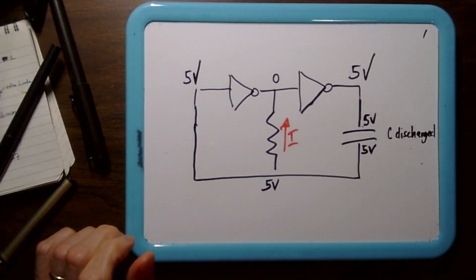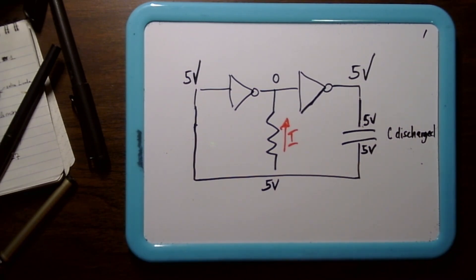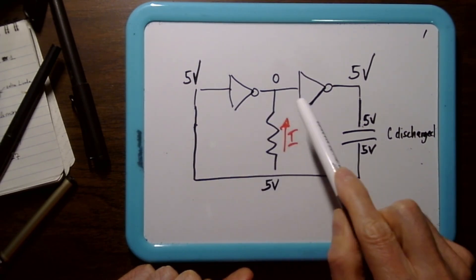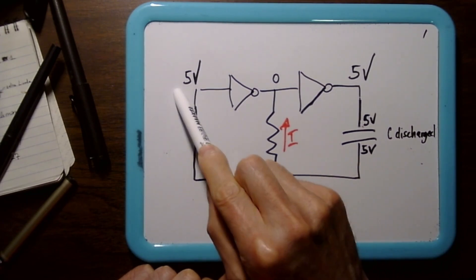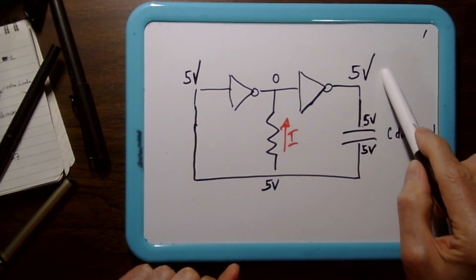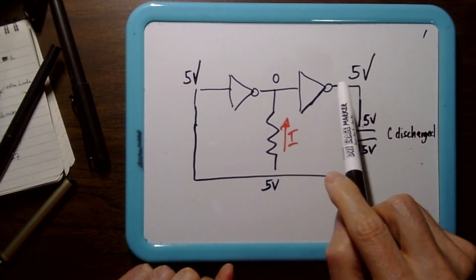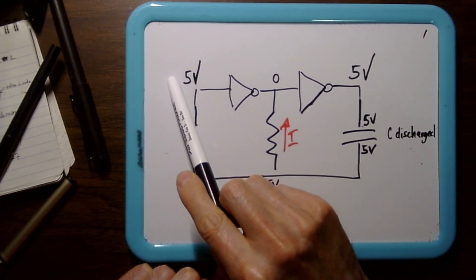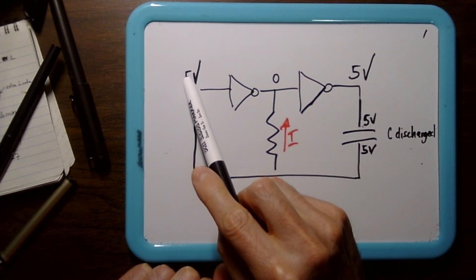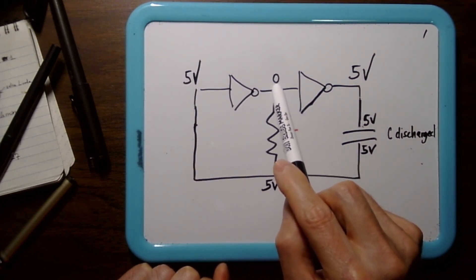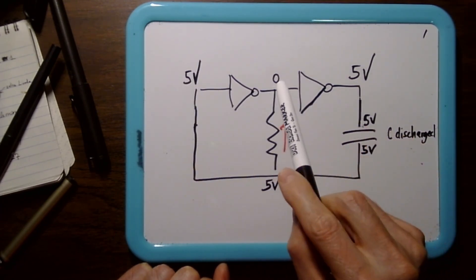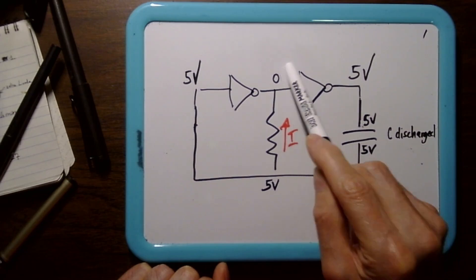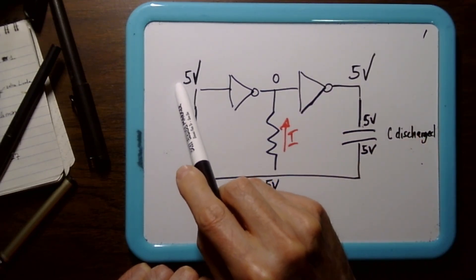So this is the circuit — a simplified circuit. Here you have one NOT gate, and here's another NOT gate. This is your input, this is your output. You probably know that the NOT gate functions as follows: if you give it a high input, in this case 5 volts, you get a low output — 0 volts. And if you give it a low input, you get a high output, so you get 5 volts.